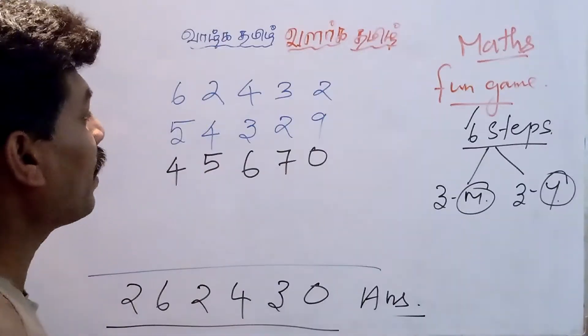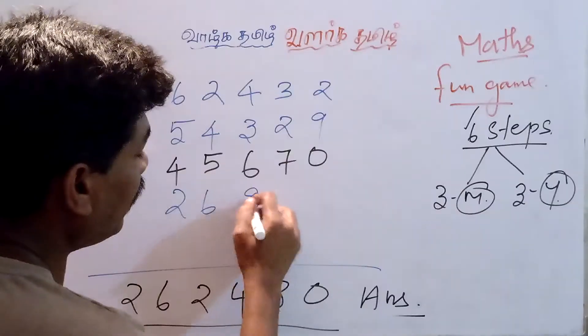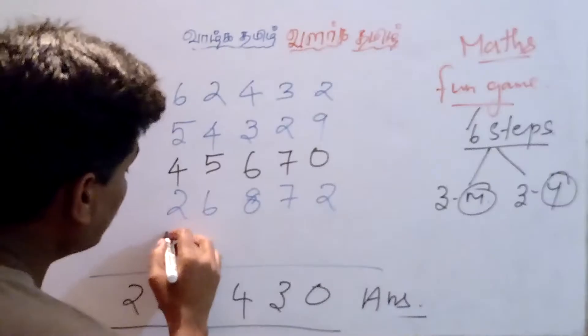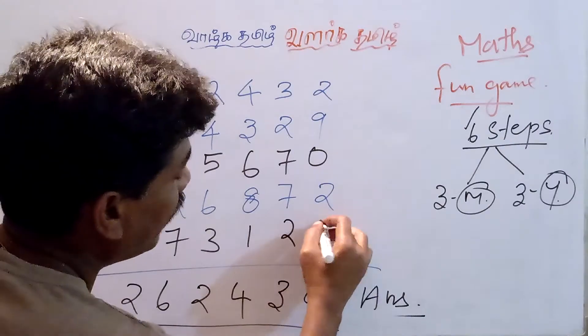Say your numbers: 2, 6, 8, 7, 2. And my numbers are 7, 3, 1, 2, 7.